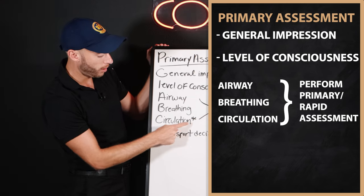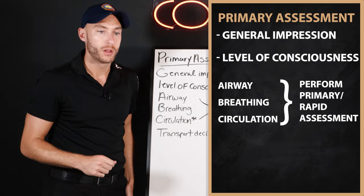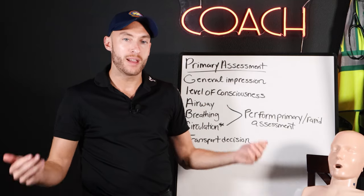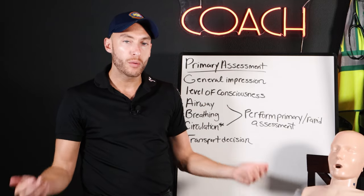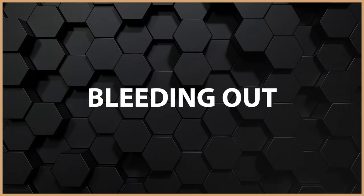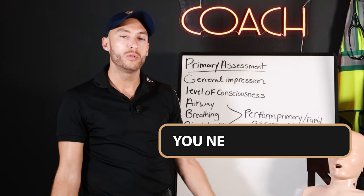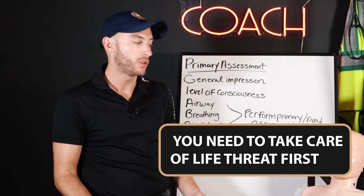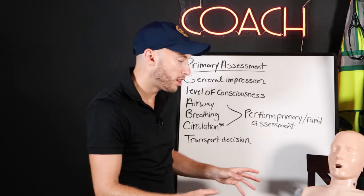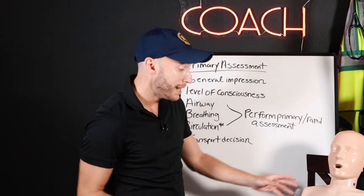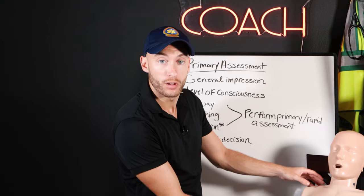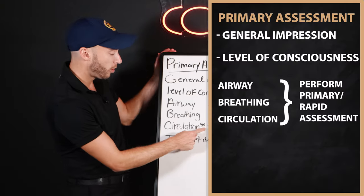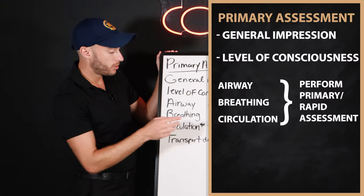There's a star under circulation — here's why. If you walk up to a patient and see they have a major external bleed and they're bleeding out, you need to take care of that life threat first before doing anything else. So you expose your patient, you see a major bleed — take care of that first. Then go back to your airway and breathing.